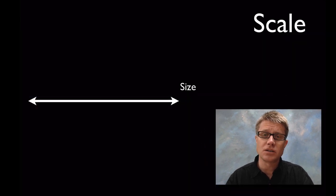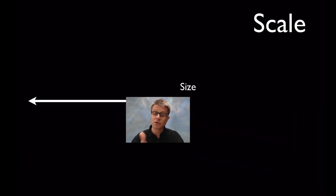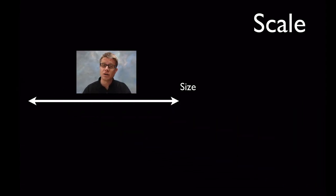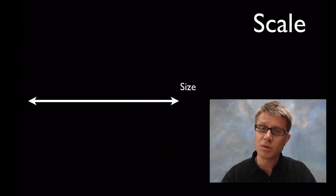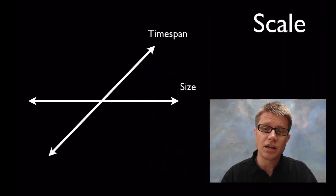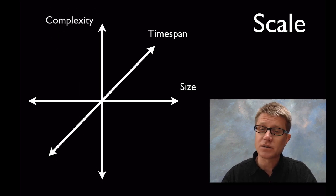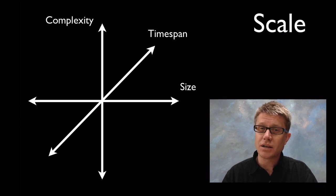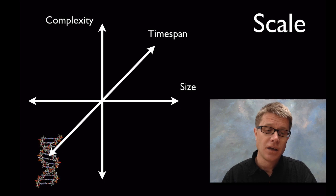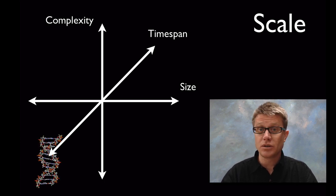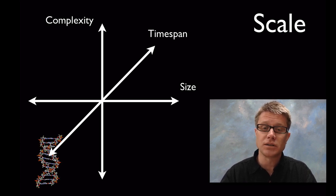We want you to be able to make connections of scale. We want you to be able to understand how biology works at the very small scale, at the medium scale, and at the very large scale. Something at the small scale would be molecules. We also want you to understand scale as far as time span — from microseconds all the way up to geologic time. And also we want you to understand complexity, from things that are very simple to things that are almost infinitely complex like the human mind. So for example, DNA is going to be really small, not very complex, made up of a few different atoms, and it operates on a very small time scale.